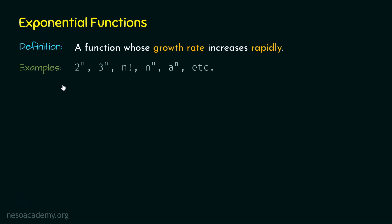Here are some examples of exponential functions: 2 to the power n, 3 to the power n, n factorial, n to the power n, a to the power n, and so on. These are all exponential functions, where a is some constant. Usually an exponential function is constant to the power of n, which is opposite to the polynomial function where we have n to the power of a constant.